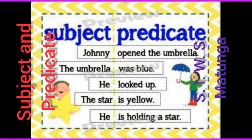Let us see some more examples. Johnny opened the umbrella. Who opened the umbrella? Johnny. So, Johnny is the subject here. Opened the umbrella is the predicate.